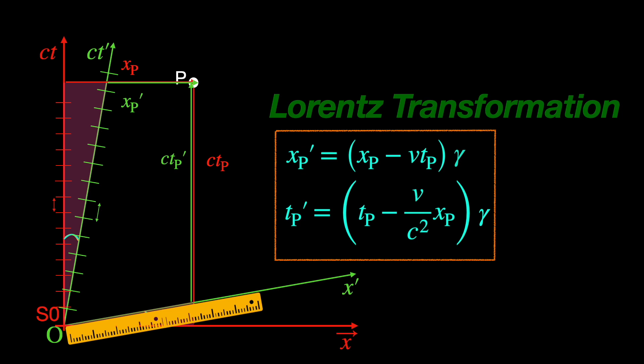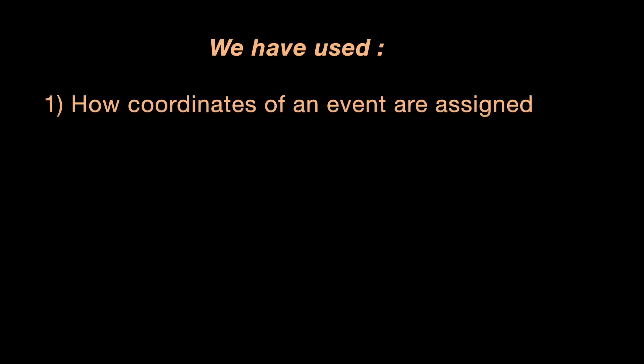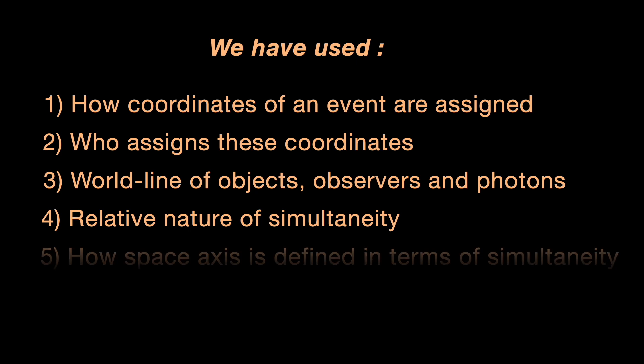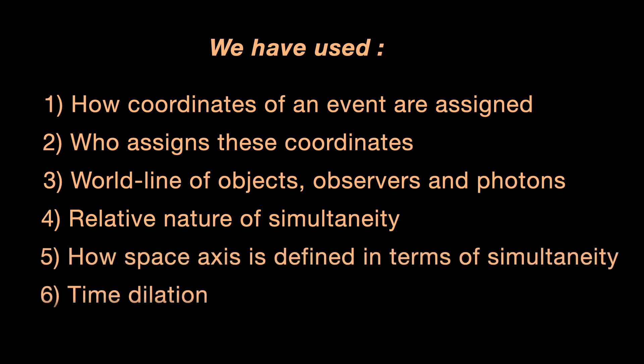Notice that to get to this point, we have used how coordinates of an event are assigned and who assigns them, world lines of objects, observers and photons, relative nature of simultaneity, and how the definition of the space axis comes from the concept of simultaneity, and finally, time dilation.